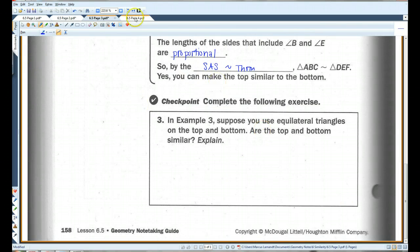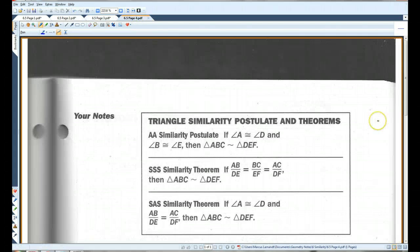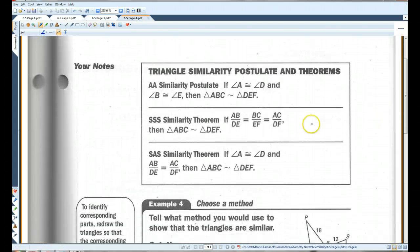I'll let you guys do the checkpoint. Let's go on to page 4. So, we've learned three similarity postulates and theorems: angle-angle, side-side-side, and side-angle-side. Tell what method you would use to show that the triangles are similar.